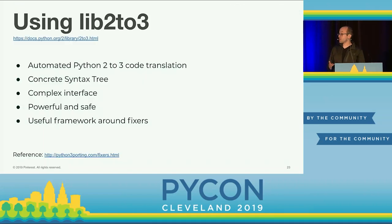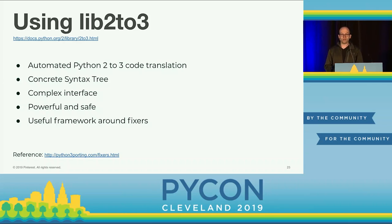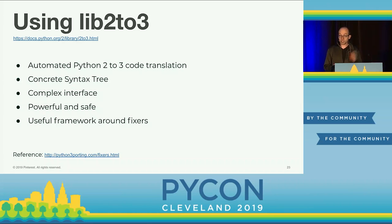One option is to use lib2to3 directly rather than tools built on top of it. lib2to3 was bundled with the 'tool 2to3' for automated Python 2-to-3 code translation. It's a concrete syntax tree with a fairly complex interface that makes ad-hoc one-off transformations tricky. It's very powerful and safe, with a useful fixer framework that makes writing fixers fairly easy. It provides nice tooling — you can optionally show a diff of the change you're about to make or apply it directly.